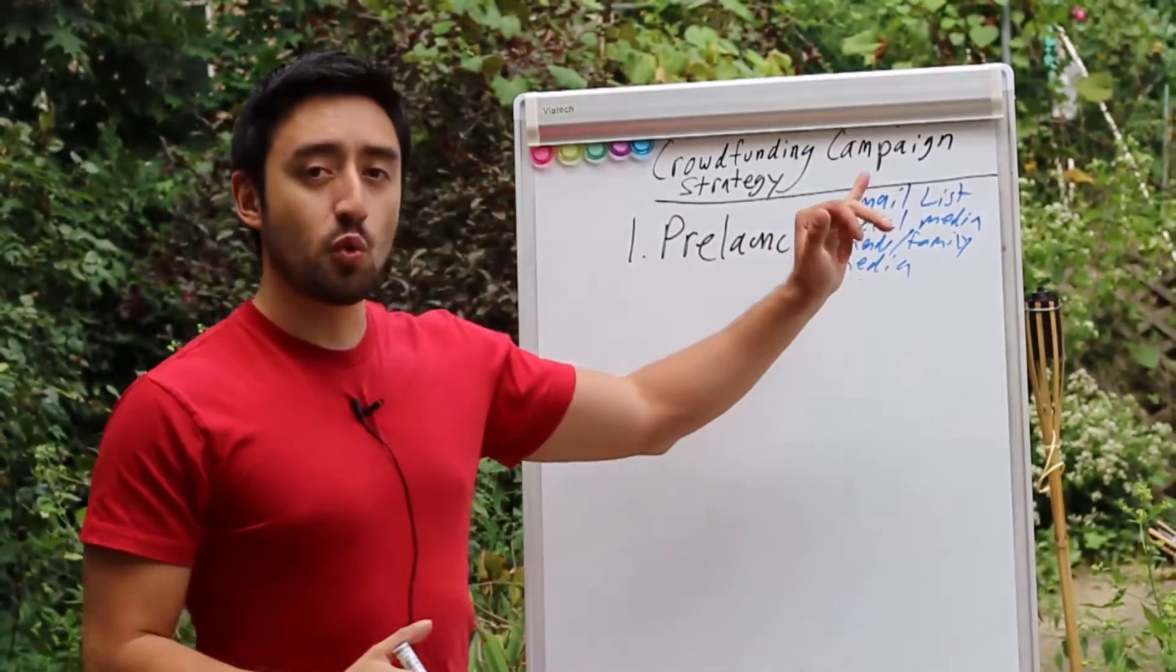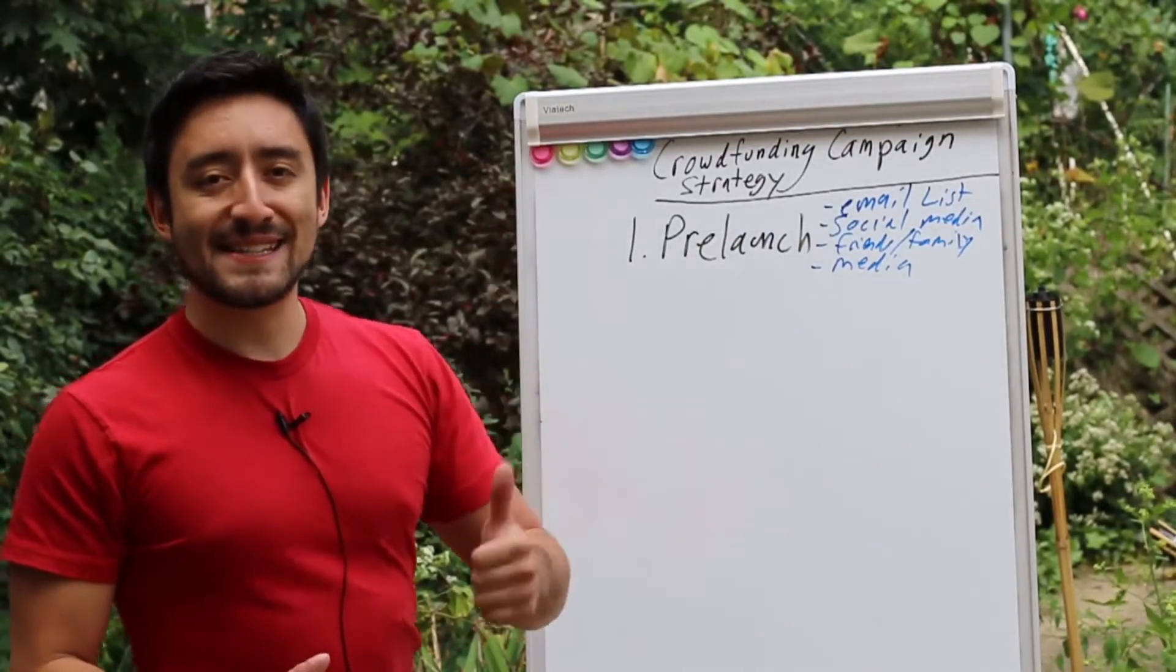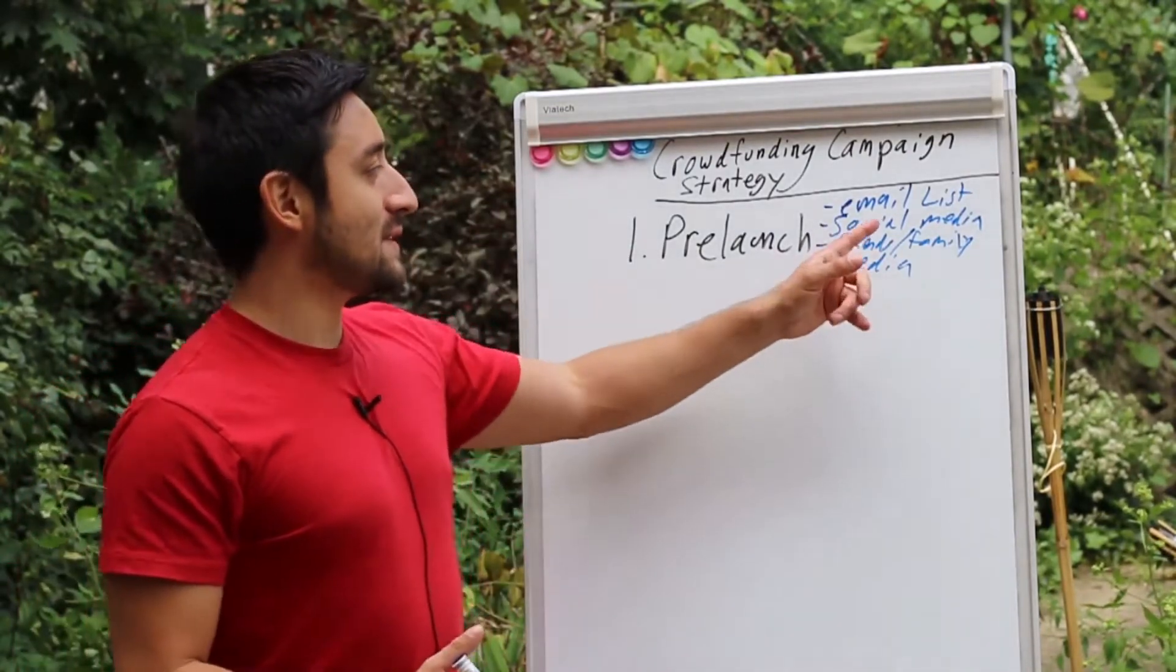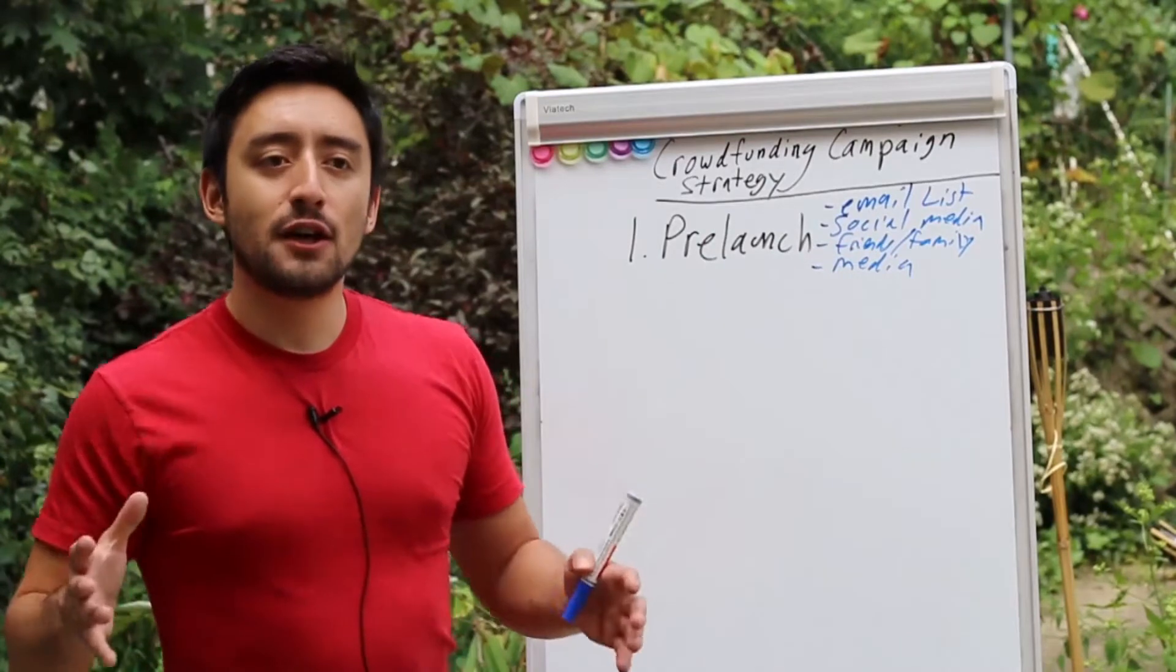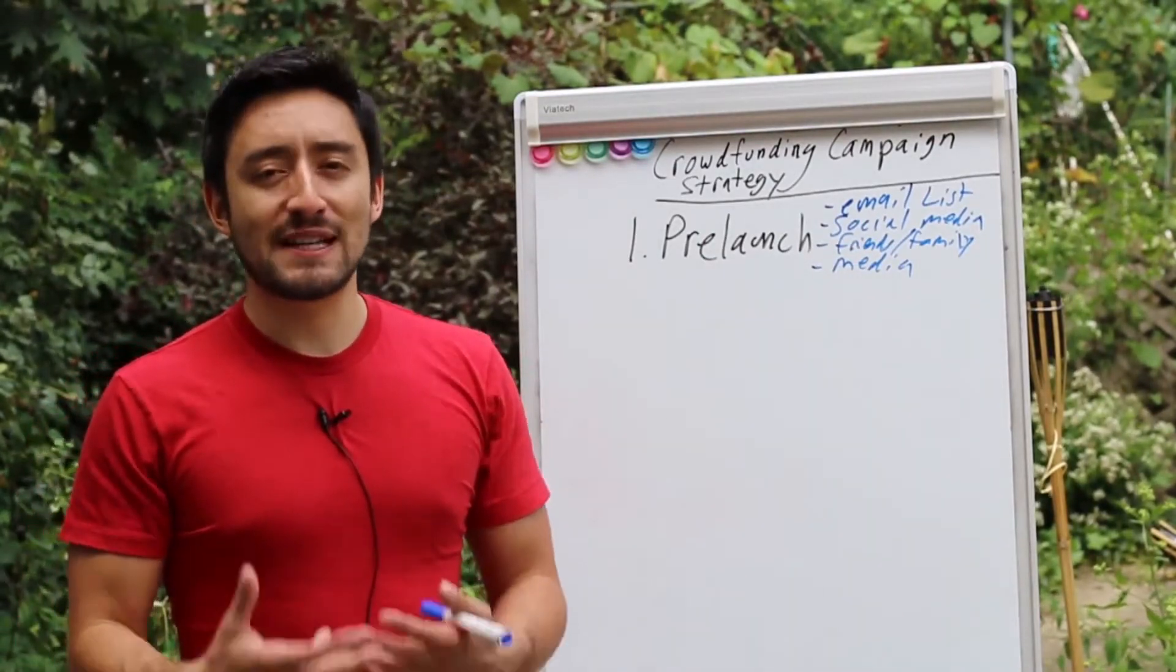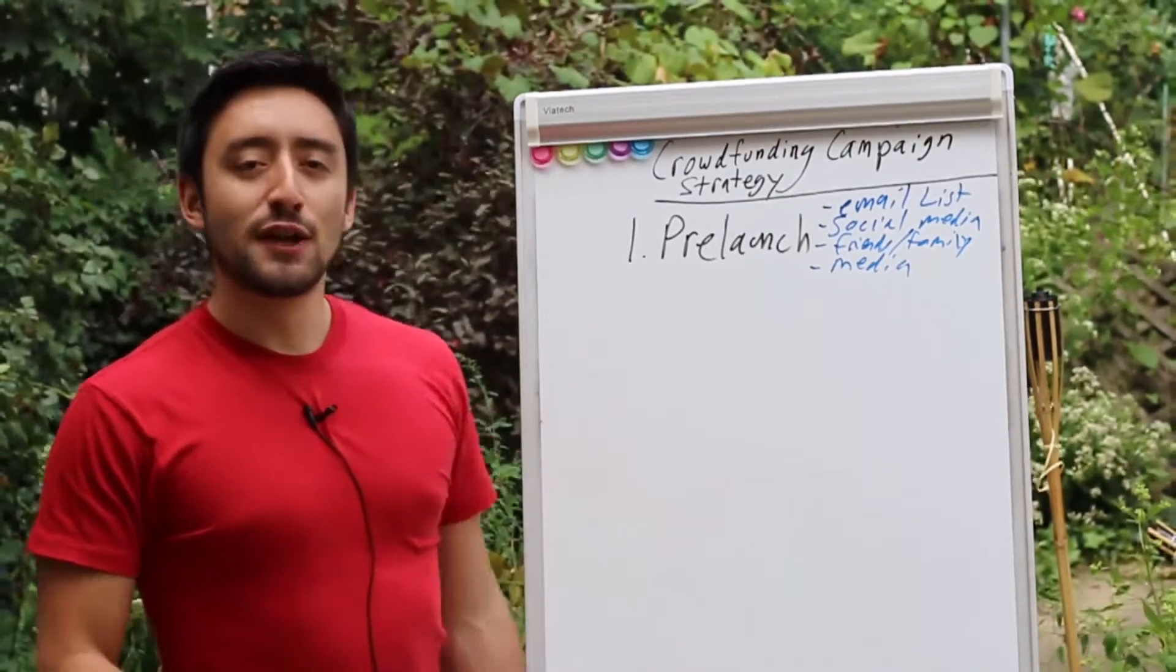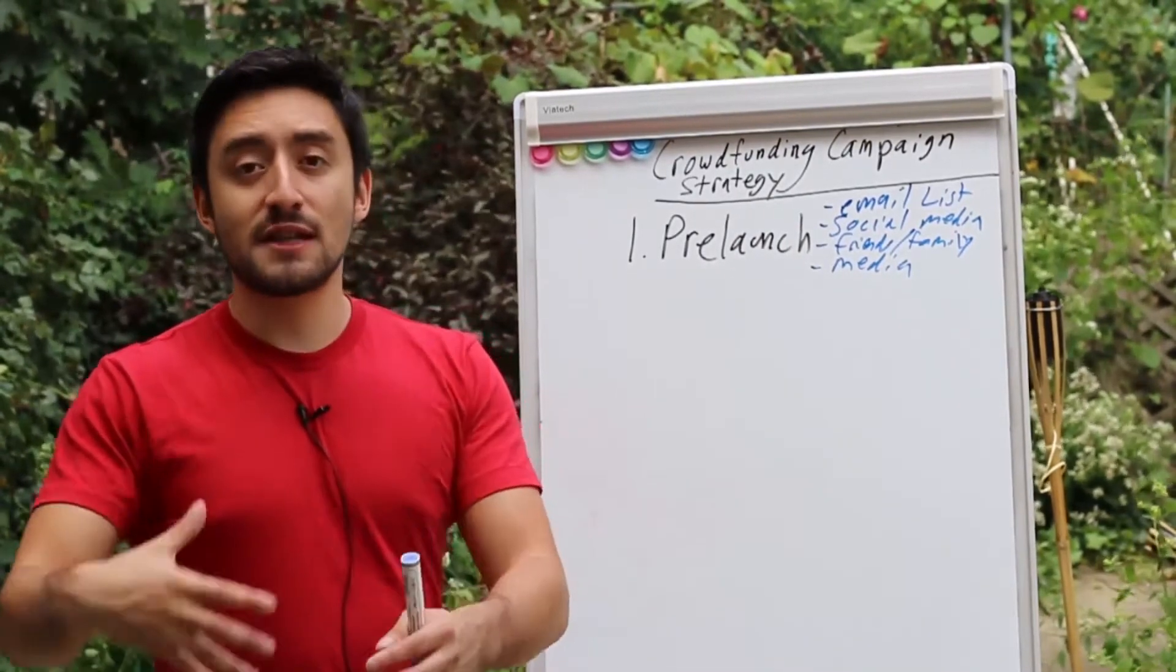But basically what you're doing is you're warming people up, number one. Number two, you're creating assets that you could draw on like the email list, like social media. And finally, you're giving this expectation that something is coming. So it doesn't seem like spam when you just start to share this link with your friends or people or your followers. You're actually creating expectation that something is coming.